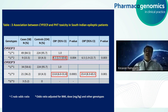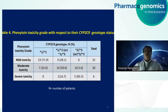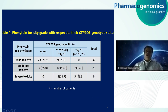Among these genotypes, those carrying star 3 have a higher risk for developing phenytoin toxicity. Among different grades of toxicity, those with severe toxicity are more likely to be carrying this variant. Those carrying this variant are more susceptible to toxicity.